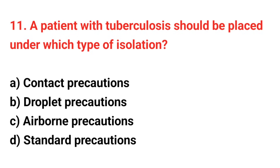Question number 11: A patient with tuberculosis should be placed under which type of isolation? The right answer is option C: Airborne precautions.